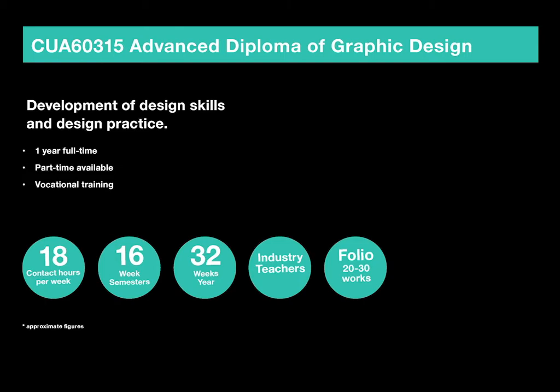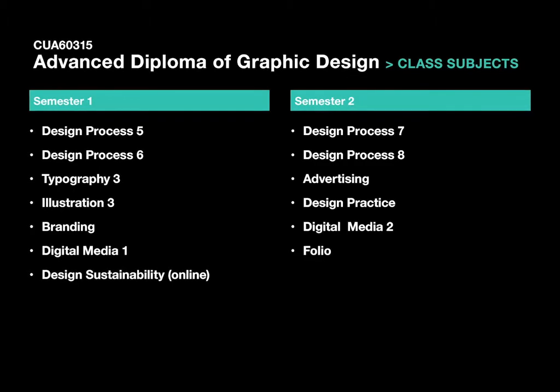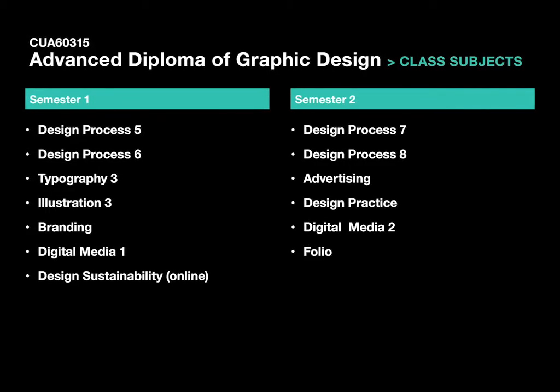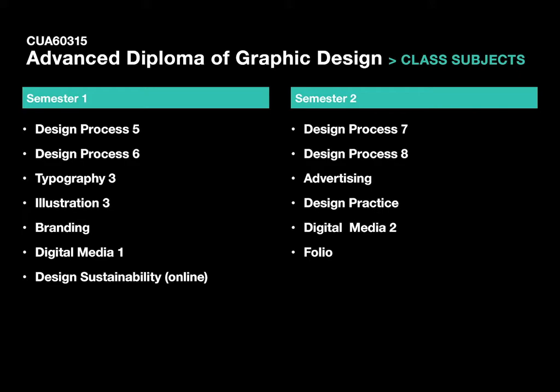The main differences in the Advanced Diploma classes are: Branding — logos and style guides for a whole semester. Digital Media 1 and 2 looks at animation, 3D and effects. Design Sustainability is an online subject looking at sustainability of running your own business and being aware of sustainability as a designer. Advertising covers ad campaign creation, storyboarding and social media posting. Design Practice covers how to set up your own business — by the end you'll have a good idea of how to run your own business or freelance as a solo designer. Folio is a class at the very end of the year where you either exhibit your work or create a folio together.